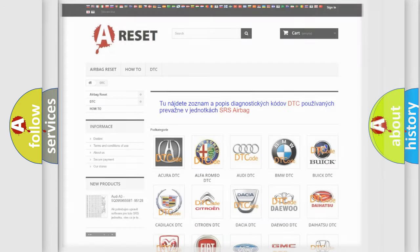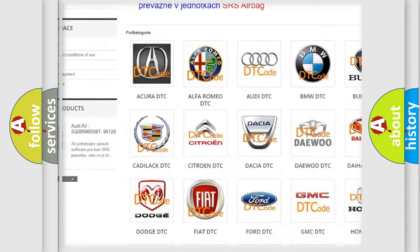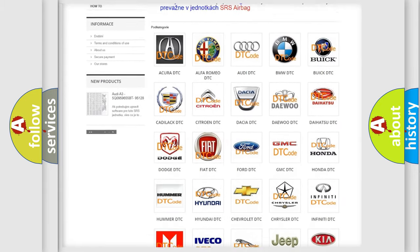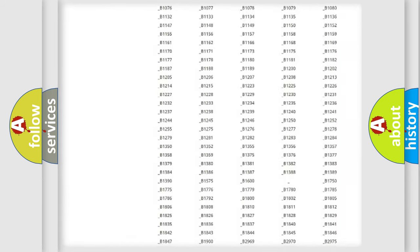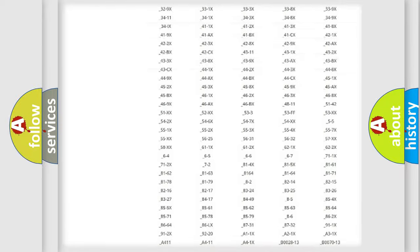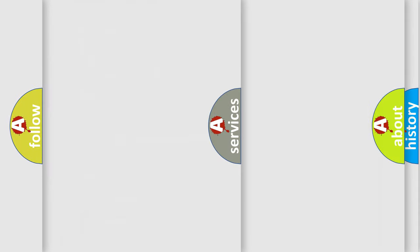Our website airbagreset.sk produces useful videos for you. You do not have to go through the OBD2 protocol anymore to know how to troubleshoot any car breakdown. You will find all the diagnostic codes that can be diagnosed in Mercury vehicles, and also many other useful things.